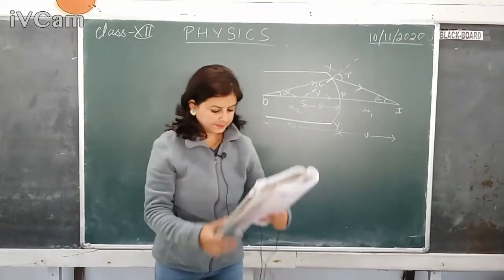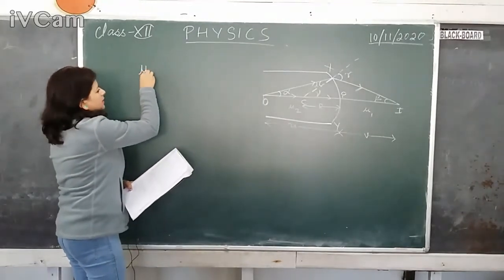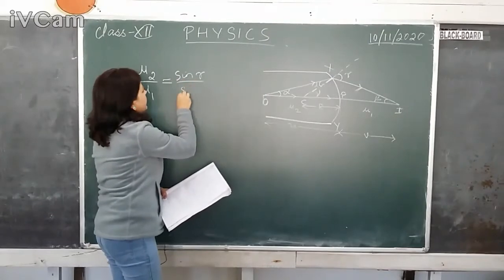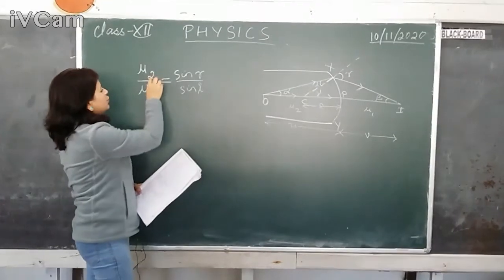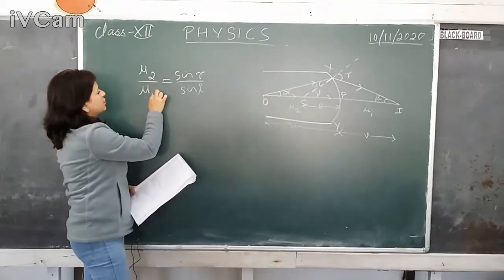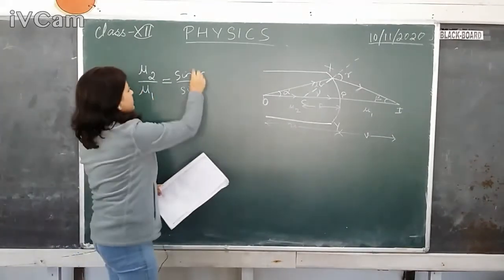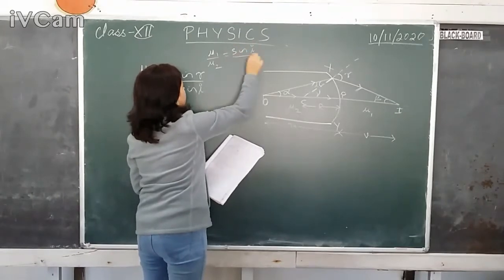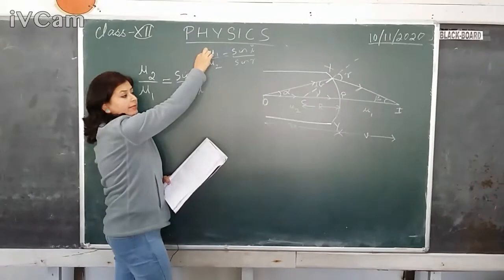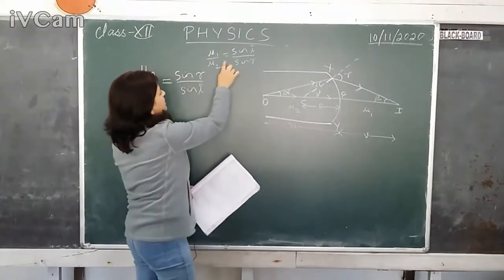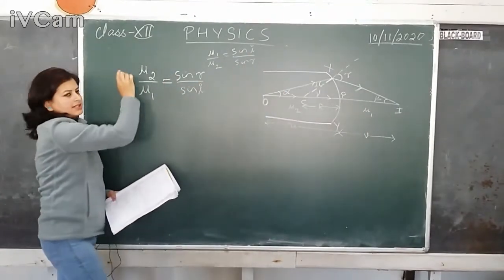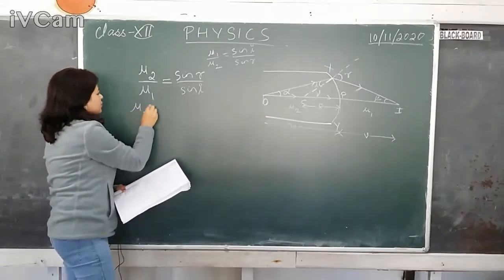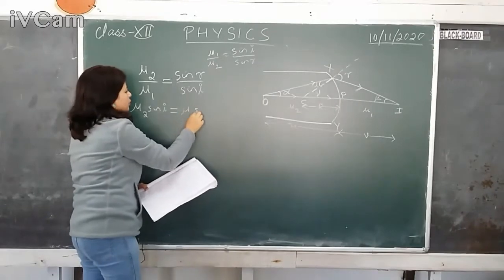Now let's apply Snell's law. Mu2 by mu1 is equal to sinR by sinI, which by the conventional formula gives mu1 by mu2 equals sinI by sinR. Reversing this: mu2 by mu1 equals sinR divided by sinI. Cross-multiplying: mu2 sinI equals mu1 sinR.